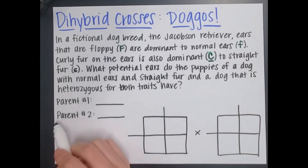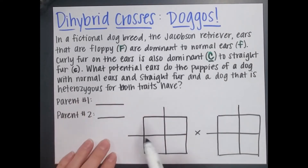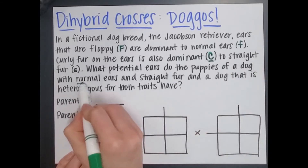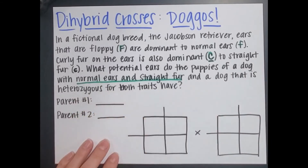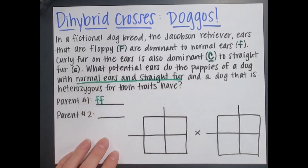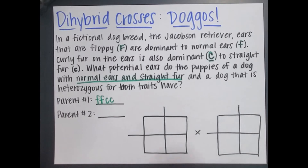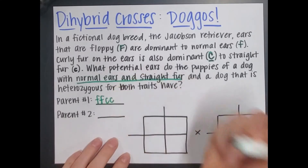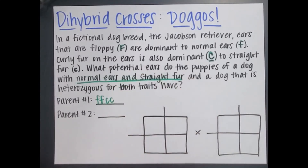Now I need to look at my parent genotypes, just like we do for a monohybrid cross. Parent one is a dog with normal ears and straight fur. Normal ears are recessive, so they need two little f's. Straight fur is also recessive, so they have two little c's. Notice I made my c's smaller than the f's so it's easy to tell dominant from recessive — make it very obvious to yourself when you write them.